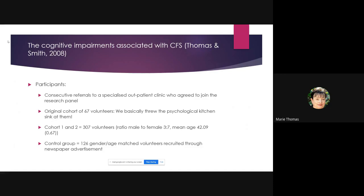Participants were consecutive referrals to a specialised outpatient clinic who agreed to join the research panel. The clinic was initially funded by the Linbury Trust, not the NHS, because they were only seeing four patients per clinic morning — not cost effective, but necessary given how little was known. The original cohort was 67 volunteers. Building to cohorts one and two, we recruited 307 volunteers with a 3:7 ratio and mean age of 42. A gender- and age-matched control group was recruited through newspaper advertisements.